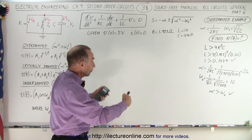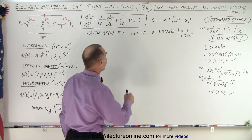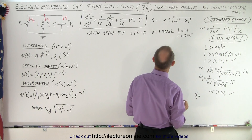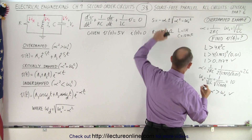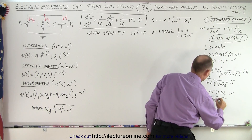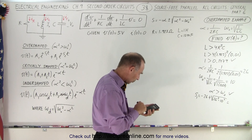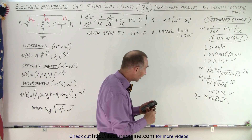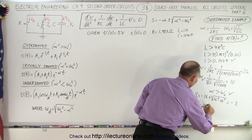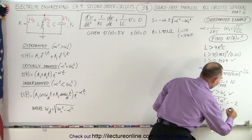Those are the two ways to verify you're dealing with an overdamped case. Now we need to find the two solutions S1 and S2 for the characteristic equation. S1 equals minus alpha plus the square root of alpha² minus omega-naught², which is minus 26 plus the square root of 26² minus 10². That's 676 minus 100, whose square root is 24, giving minus 26 plus 24 equals minus 2. S2 equals minus 26 minus 24, which equals minus 50.